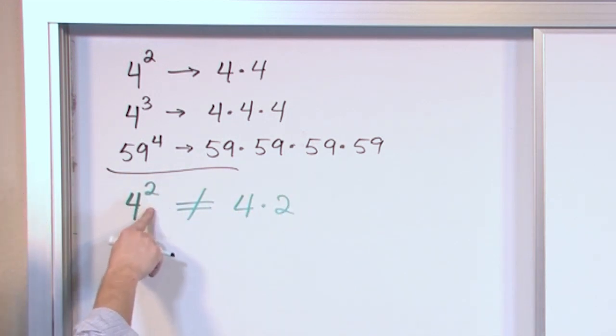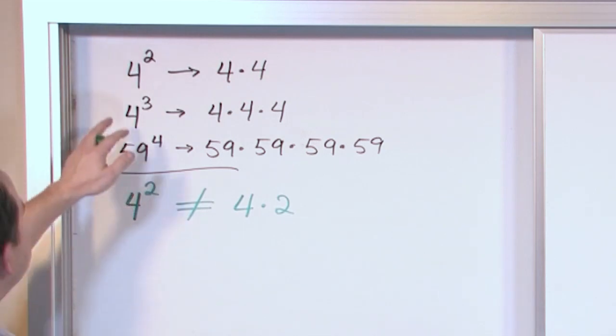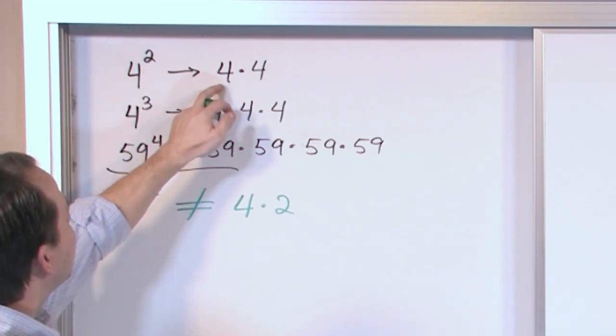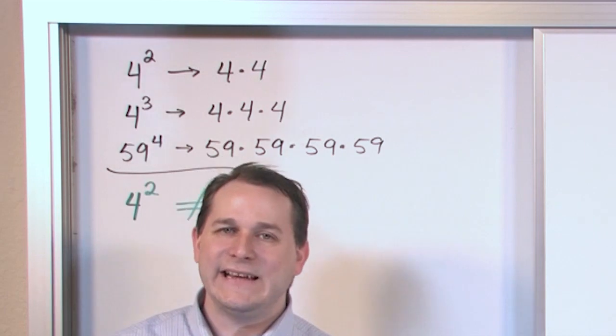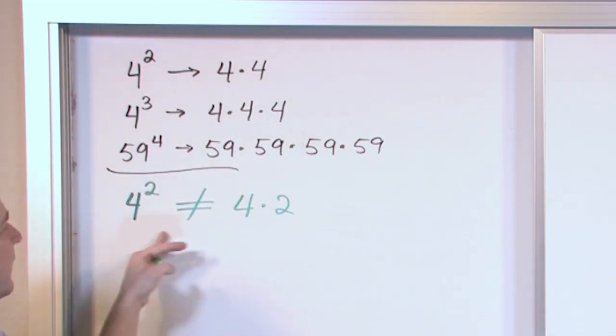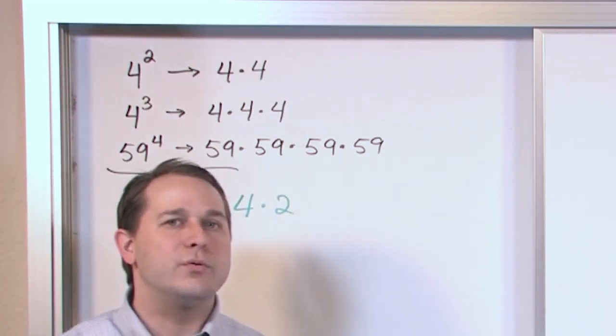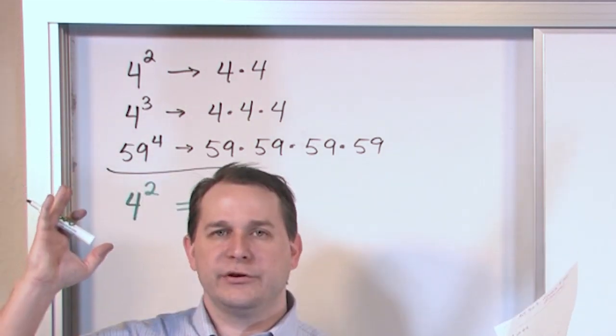A lot of students will look at these numbers and say, well, four times two, that's eight. Well, that's wrong. Because we already said that four squared is equal to four times four. Four times four is sixteen. Four times two is eight. So you can see that these two things are not equal. So you definitely don't just multiply by the exponent and you're done.